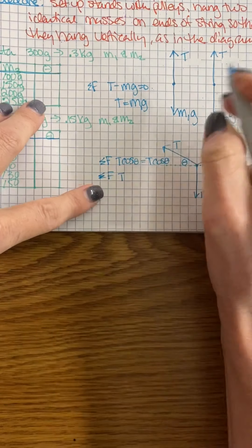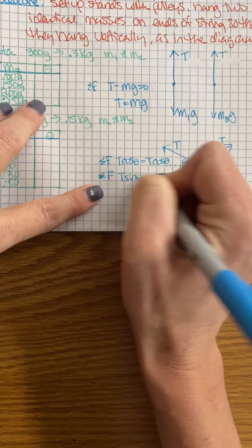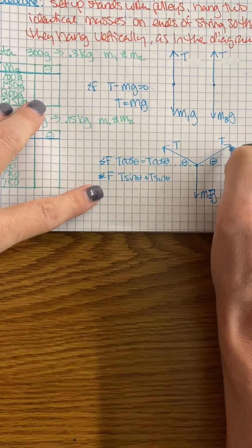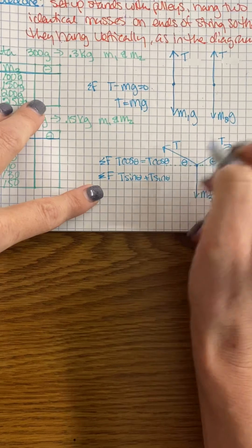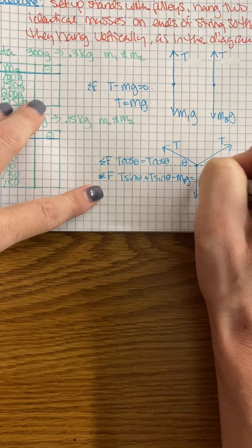So I have T—I'm looking from the up and down—sine theta plus T sine theta, this one over here, minus M3g is equal to zero.